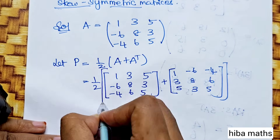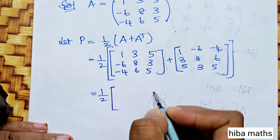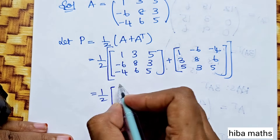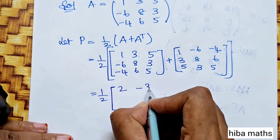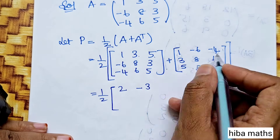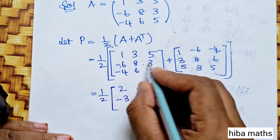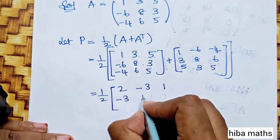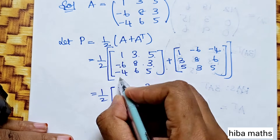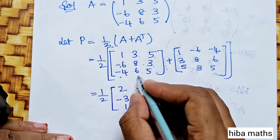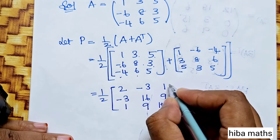Taking 1 by 2 as common and adding corresponding elements: [2, -3, 1; -3, 16, 9; 1, 9, 10]. So P equals 1 by 2 times [2, -3, 1; -3, 16, 9; 1, 9, 10].